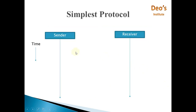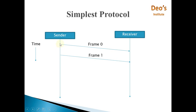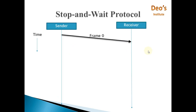In the simplest protocol, you have a sender and a receiver on a timeline. The sender sends frame 0 and it is received at the receiver after a propagation delay. The sender doesn't care whether the receiver has received it or not, and sends frame 1 when ready, then frame 2 when ready. In the simplest protocol, the sender just prepares the frame and it is received by the receiver. Since it is a noiseless channel, frames will not be discarded or lost.